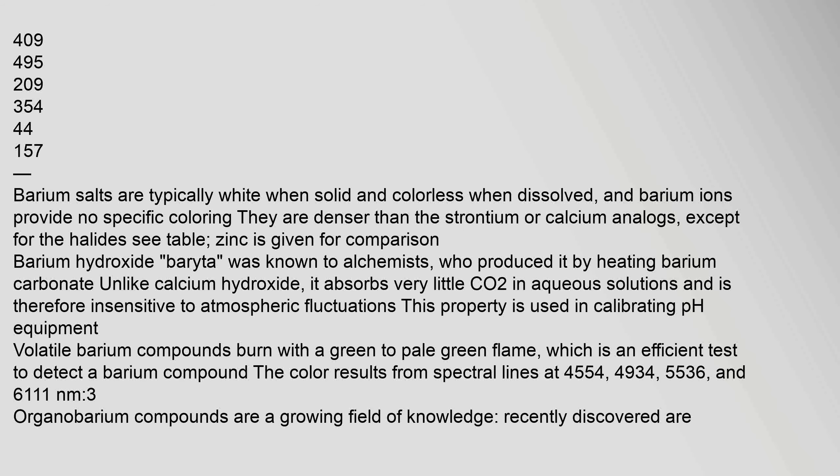Barium salts are typically white when solid and colorless when dissolved, and barium ions provide no specific coloring. They are denser than the strontium or calcium analogs, except for the halides. Barium hydroxide was known to alchemists, who produced it by heating barium carbonate. Unlike calcium hydroxide, it absorbs very little CO₂ in aqueous solutions and is therefore insensitive to atmospheric fluctuations. This property is used in calibrating pH equipment. Volatile barium compounds burn with a green to pale green flame.